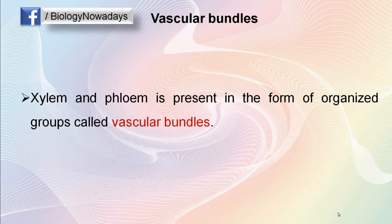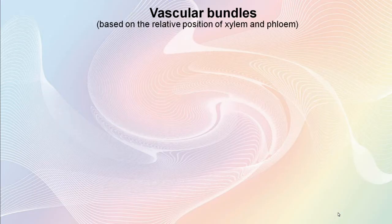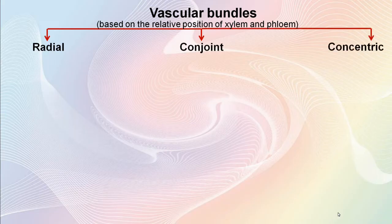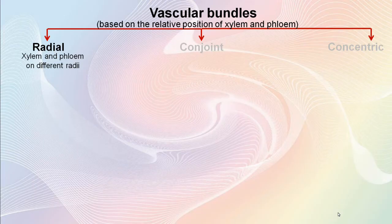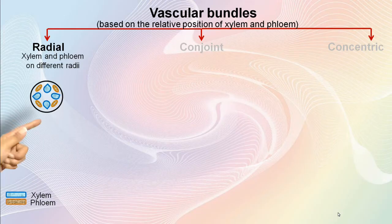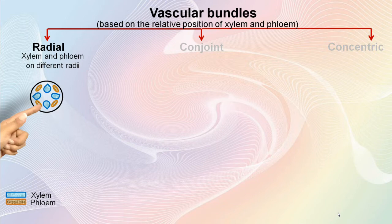Let's see the different types of vascular bundles based on the relative position of xylem and phloem. There are three basic types of vascular bundles: radial, conjoined, and concentric. In the radial type, xylem and phloem are present on different radii, alternating with each other. Here, blue colour represents xylem and brown colour represents phloem groups. Radial vascular bundles are an important feature of roots.